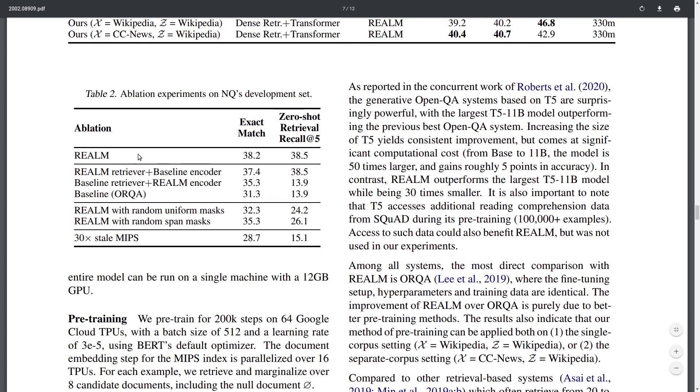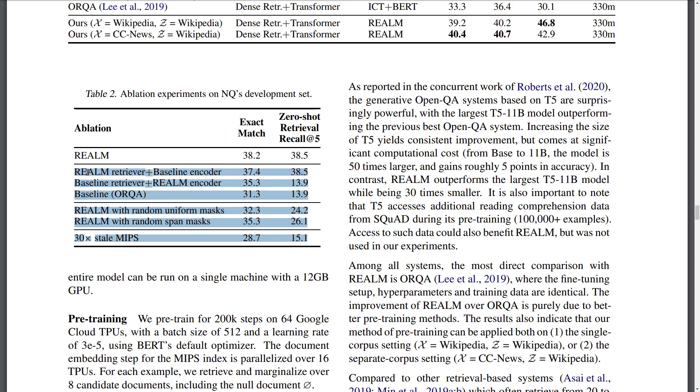So another ablation study that they do here is that they want to see, like, okay, what is the biggest effect of improving the performance? Like, is this retrieval model really benefiting the generation, the prediction step, and vice versa? Or is it like, okay, if we remove the retrieval model, nothing happens, and then it's just not doing much?